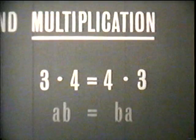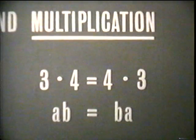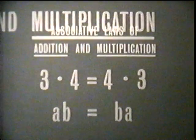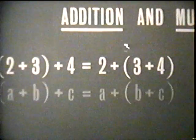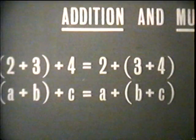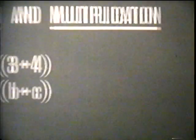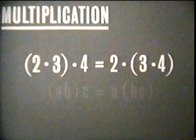The commutative law of multiplication would look like this in algebra. The associative law of addition, which is like this in arithmetic, would look like this in algebra. Here's the associative law of multiplication in arithmetic. And here it is in algebra.